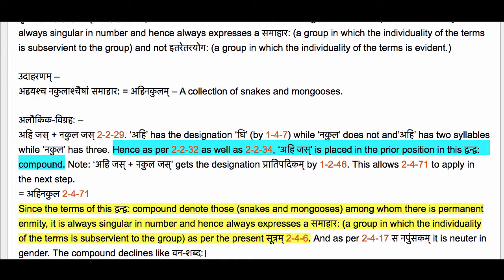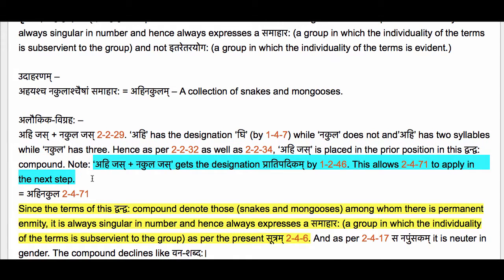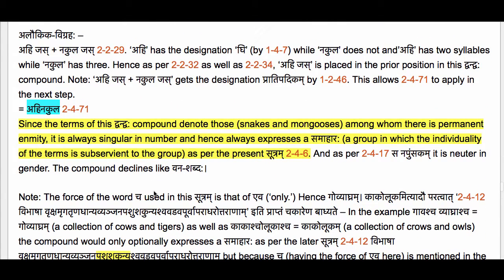Now Ahijas plus Nakulajas gets the designation Pratipadikam by 1-2-46 Krita Jita Samahashcha, because we have formed a Samaharaha. This allows us to apply 2-4-71 to perform the luk elision of the sup-affixes Jas and Jas which are inside the compound Pratipadikam. So now we have Ahinakula as the final compound Pratipadikam.